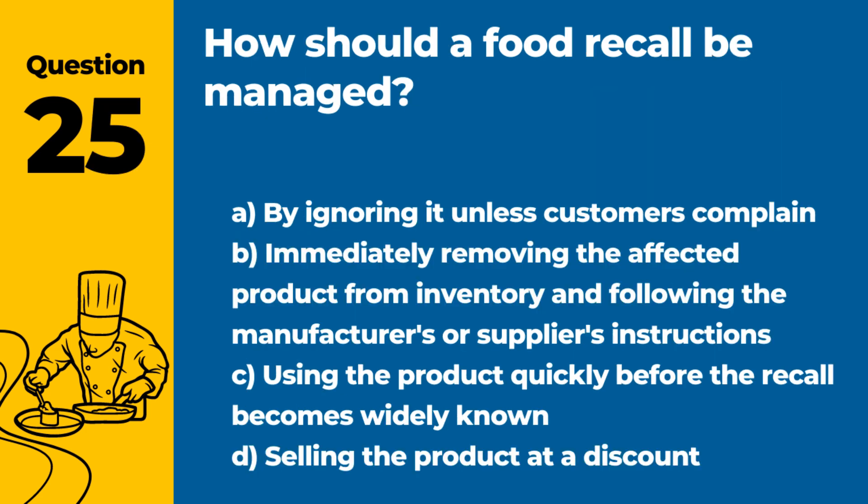Question 25. How should a food recall be managed? Answer: B. Immediately removing the affected product from inventory and following the manufacturer's or supplier's instructions. Quick action protects customers and maintains trust.